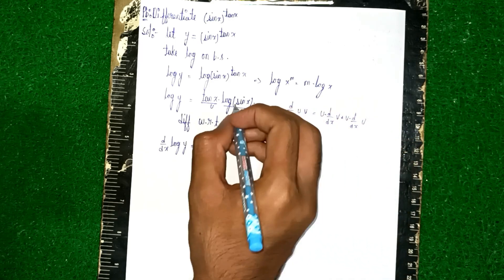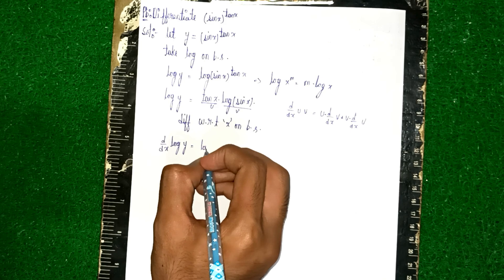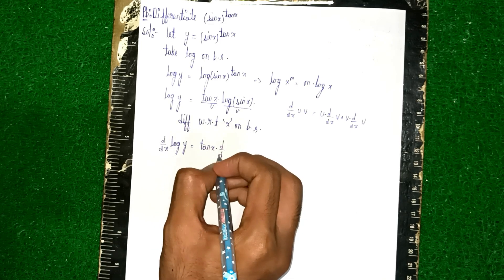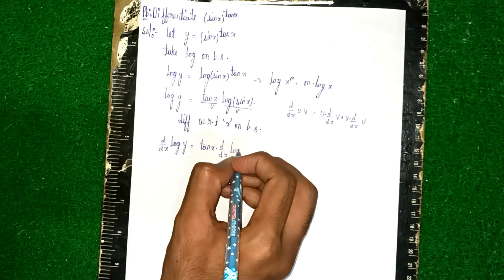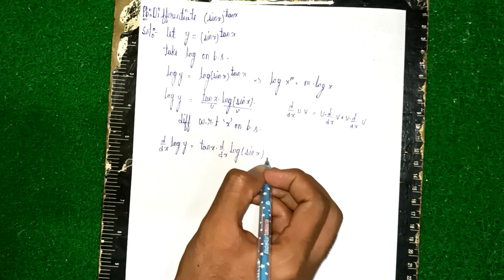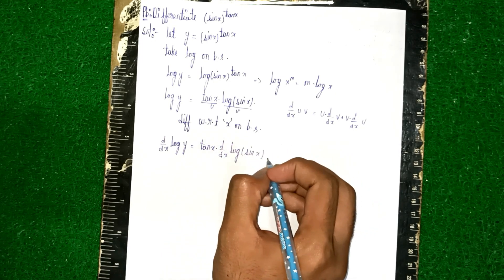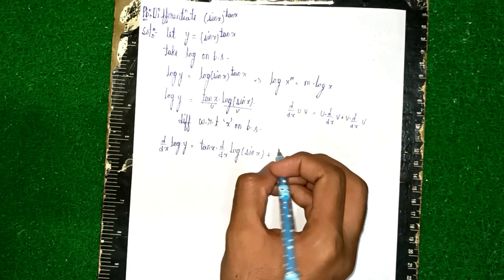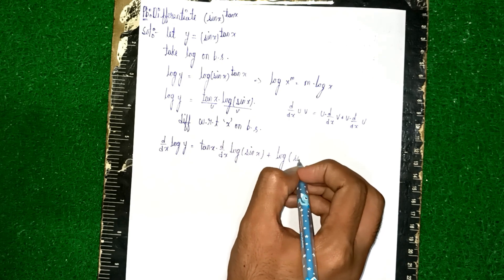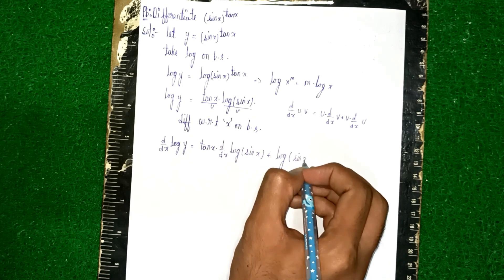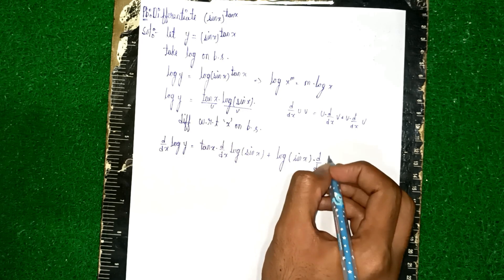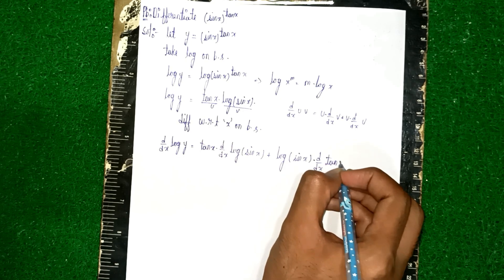Here u is tan(x) and v is log(sin(x)). Applying the UV rule: tan(x)·d/dx(log(sin(x))) + log(sin(x))·d/dx(tan(x)).